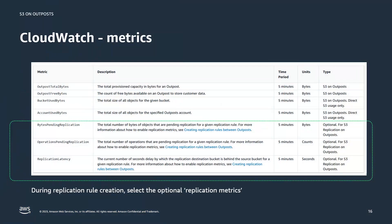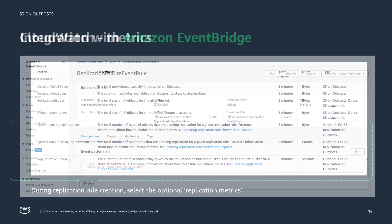On a bucket level, it'll tell you the bytes used per bucket as well as the account. Additionally, if you selected to replicate metrics on your configuration, you will see bytes pending, operations pending, and replication latency.